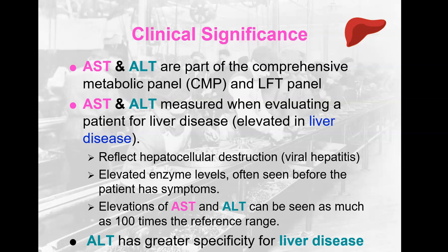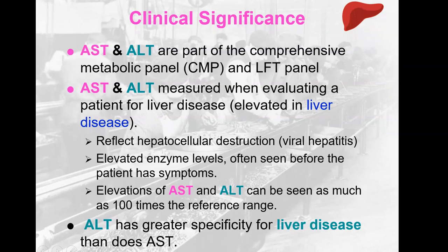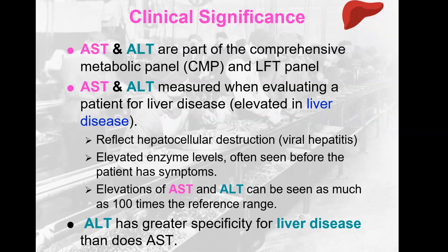AST and ALT are part of the comprehensive metabolic panel, or CMP. They're also part of the LFT — the liver function test or hepatic function panel, depending on the facility — meaning they help measure what's going on with the liver, which is different from the hepatitis panel. AST and ALT are measured when you evaluate a patient for liver disease, and you would expect them to be elevated in liver diseases.